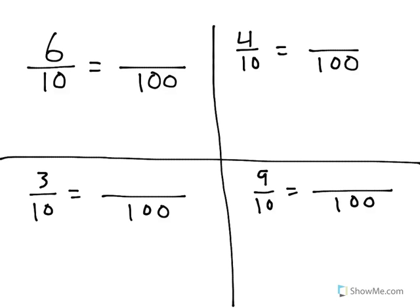In this video, we're going to look at how to quickly convert from fractions to the tenths, or rather, fractions out of 10 to fractions out of 100. There's a quick way to convert fractions: you need to multiply or divide the denominator and the numerator by the same number.